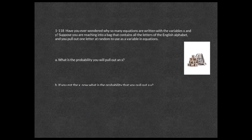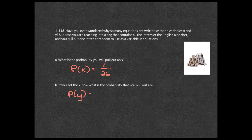This problem asks: if you reach into a bag containing all 26 letters of the English alphabet and pull one at random, what is the probability of pulling an x? There is only one x, so the probability is 1 over 26. If x has already been pulled, the probability of then pulling a y is 1 over 25.